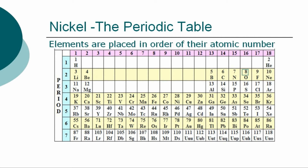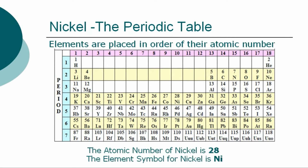The chemical elements of the periodic table are placed in order of their atomic numbers. Atomic numbers increase as you move across a row, called a group, or down a column, called a period. The atomic number for nickel is 28, and the element symbol for nickel is Ni.